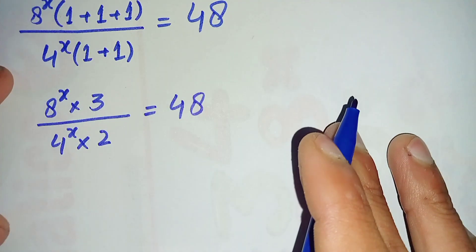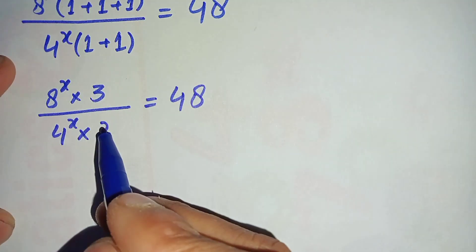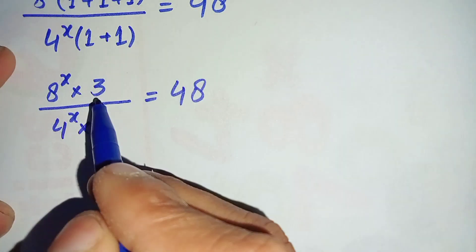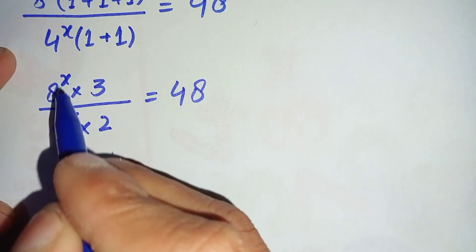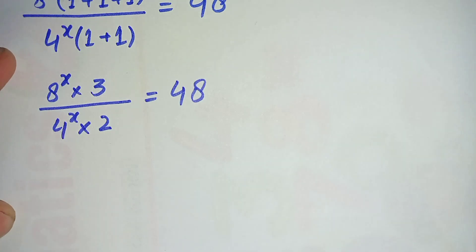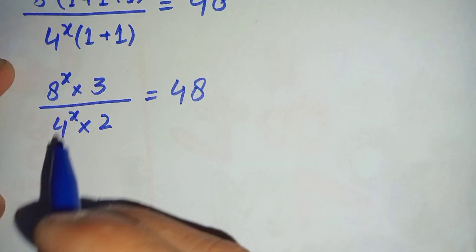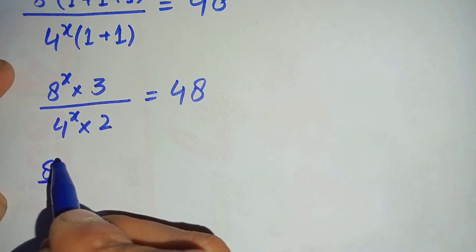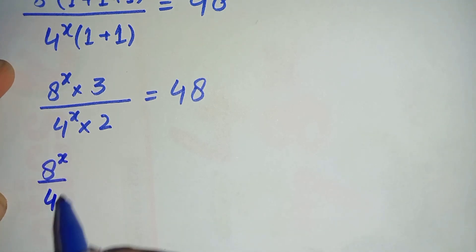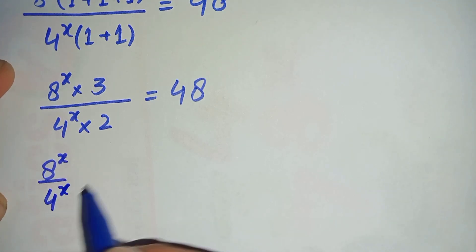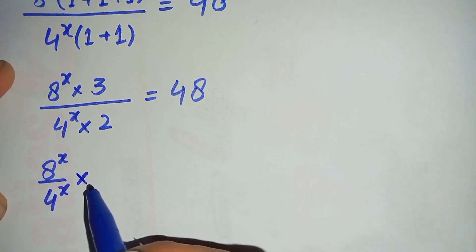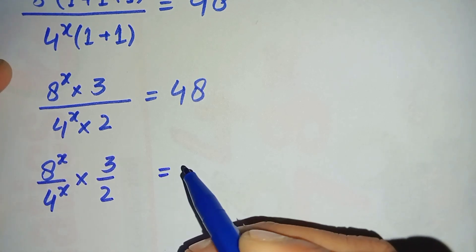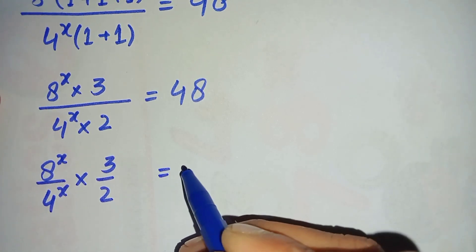In the next step we will try to eliminate the 3/2 from the left hand side. So we will separate 3/2 from 8^x divided by 4^x, giving us (8^x / 4^x) times (3/2) is equal to 48.